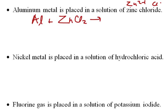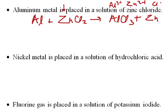Since aluminum becomes Al³⁺ — a positive ion — we know it's going to replace the zinc. When we're done, aluminum chloride is formed: Al³⁺ and Cl⁻ gives us AlCl₃, and the positive ion that's replaced becomes neutral. So: aluminum plus zinc chloride becomes aluminum chloride plus zinc metal. Now we have to go back and balance.